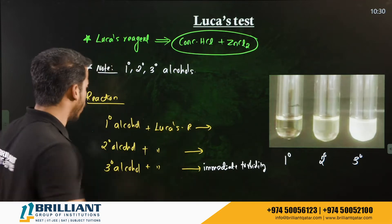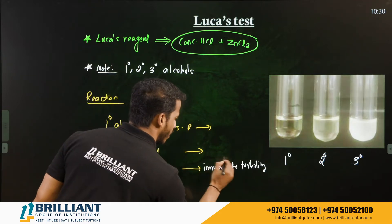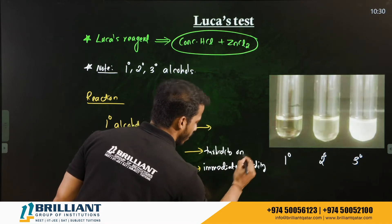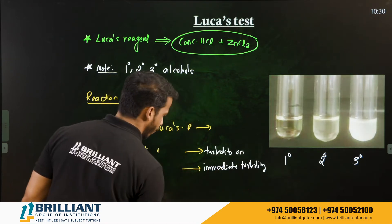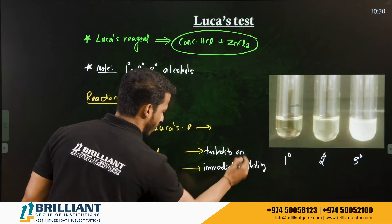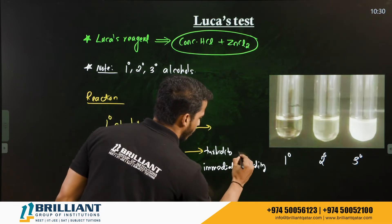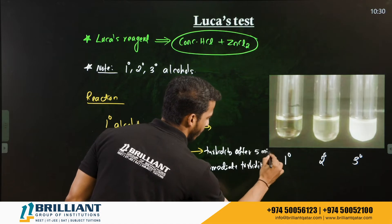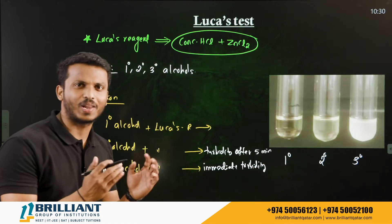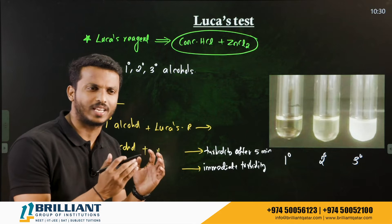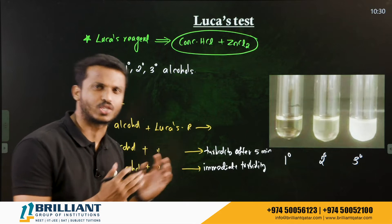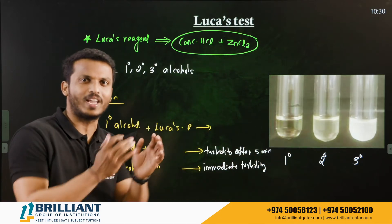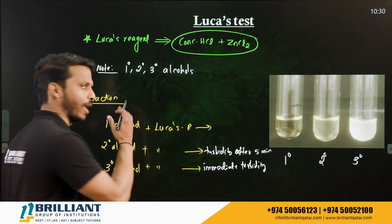Secondary alcohol will give turbidity only after five minutes. The reactivity of secondary alcohol towards Lucas reagent is a little slow — you can see small turbidity appearing, but only after five minutes.